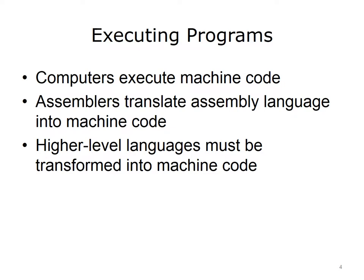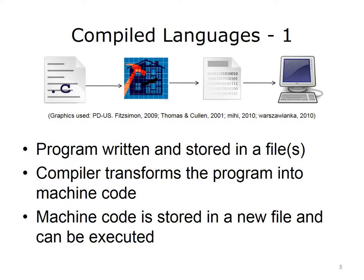This is relatively straightforward since the translation happens from a computer-specific assembly language to its corresponding machine code. But what about high-level languages that aren't specific to a particular machine? How are they converted to machine code? The answer is that higher-level languages are compiled. The compiler is a software application that takes as input a program written in a particular programming language — in the case of the image on this slide, C — and outputs machine code that can run on a computer. If there are any syntax errors in the program file, the compiler will flag them and halt compilation.